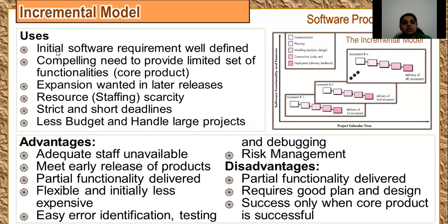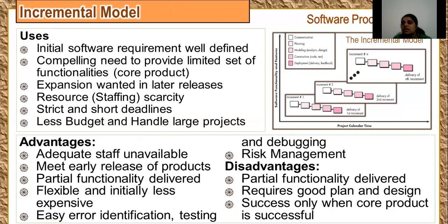This model will be used where initial software requirements are very well defined and the client is completely clear about the core product features. Next, there is a compelling need to provide a limited set of functionalities quickly — the client cannot wait and wants functionality on an immediate basis. Also, where expansion is wanted in later releases. If the client says they don't have proper funding currently but can pay for the core product now, this model is useful.